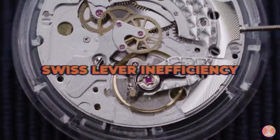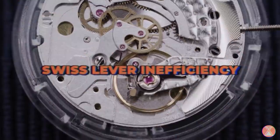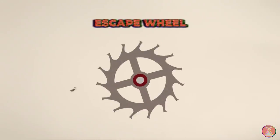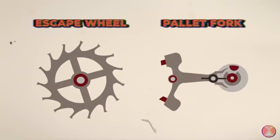So, those inefficiencies, what are they? When we're talking about the inefficiencies of the Swiss lever system, we'll first focus on the interaction between the escape wheel and the pallet fork.